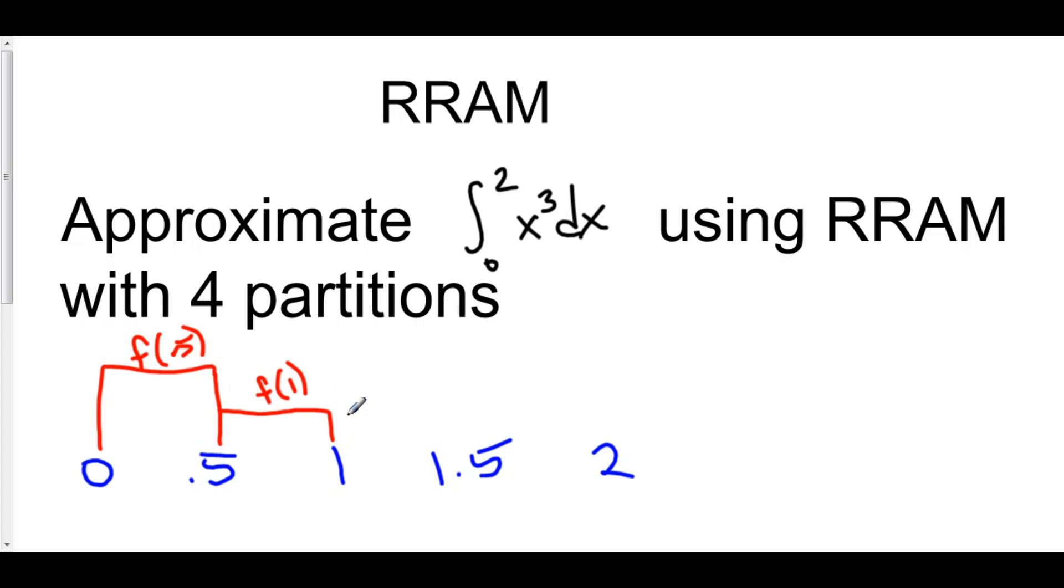Our third rectangle goes from 1.5 and over. So this is f of 1.5. That describes the height of our third rectangle.